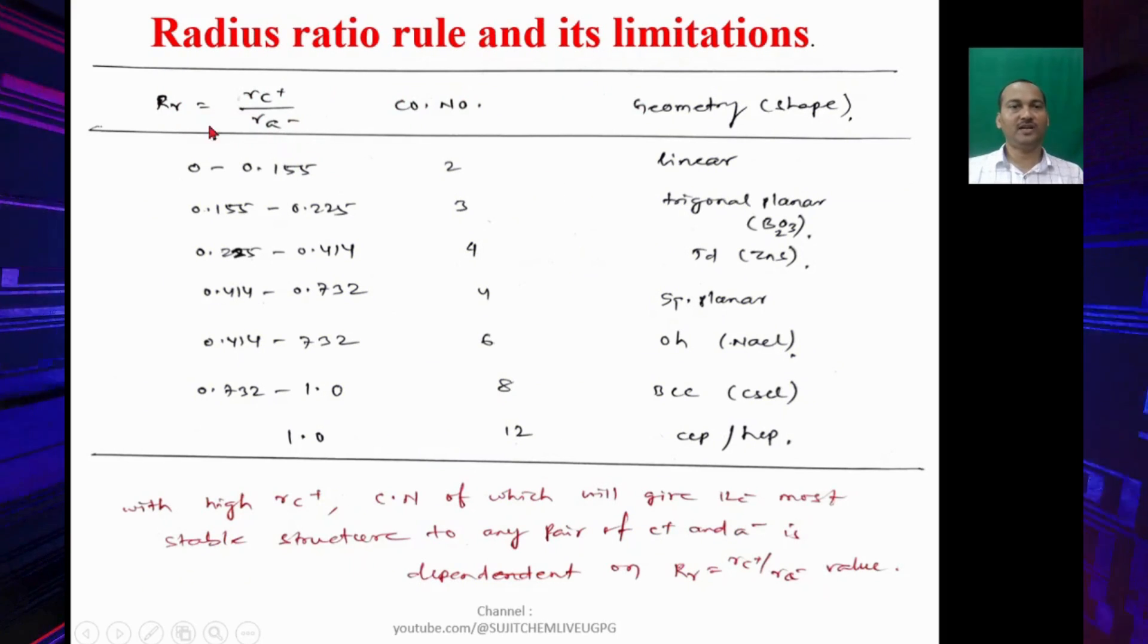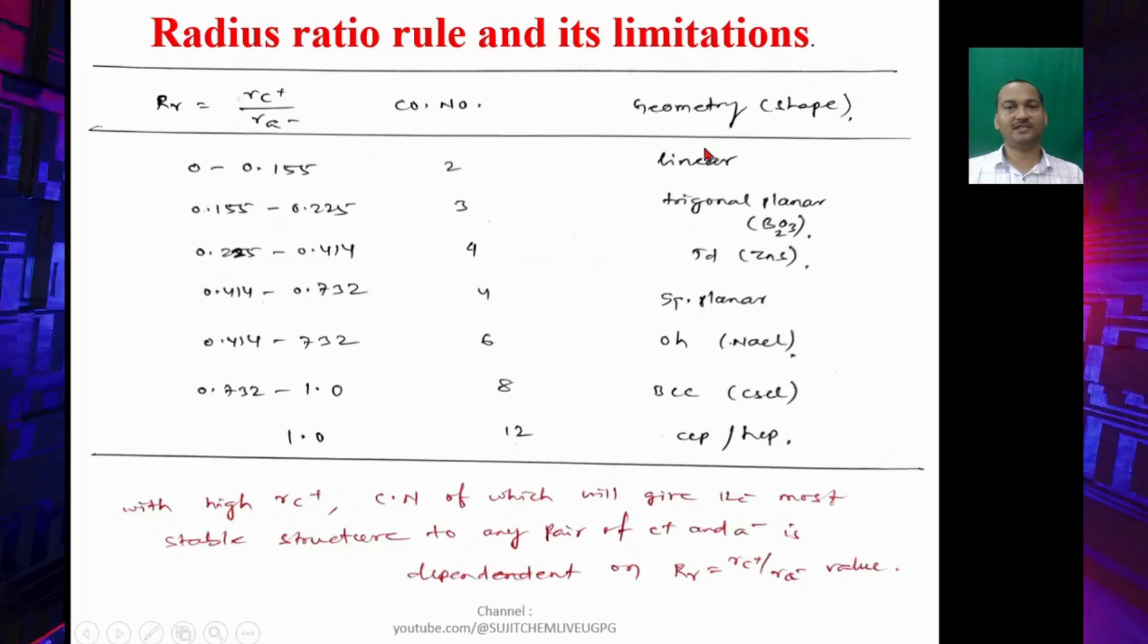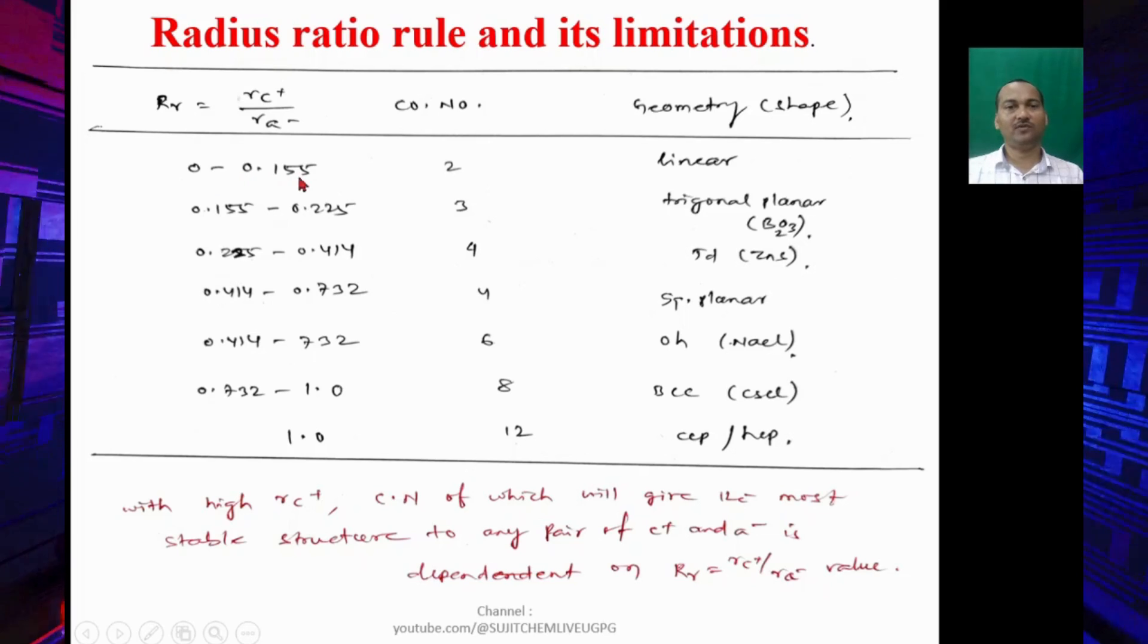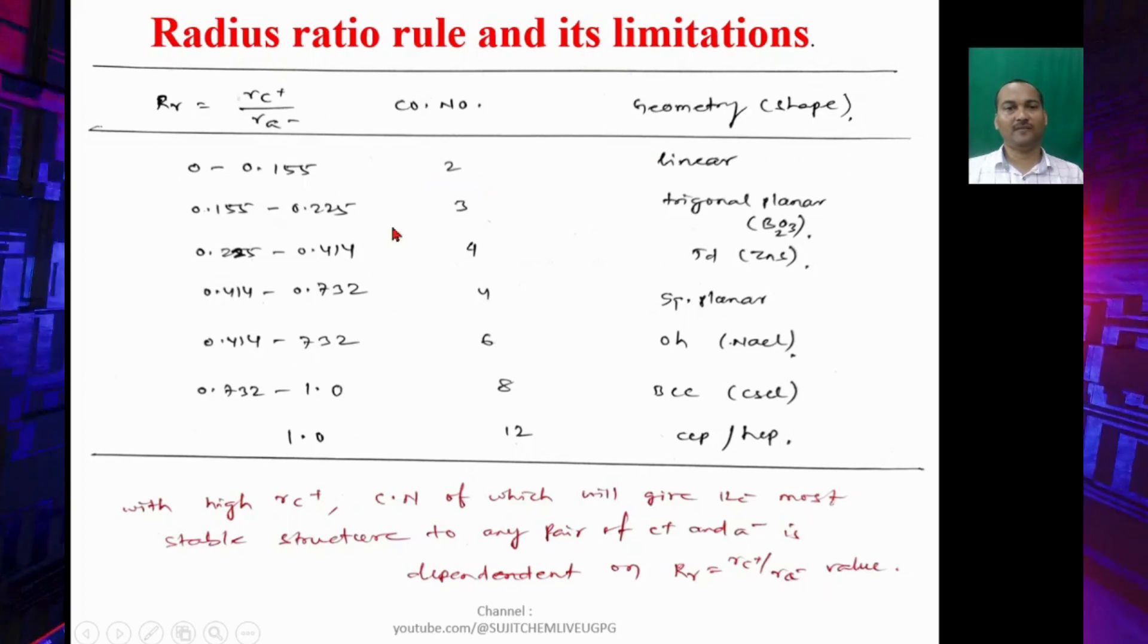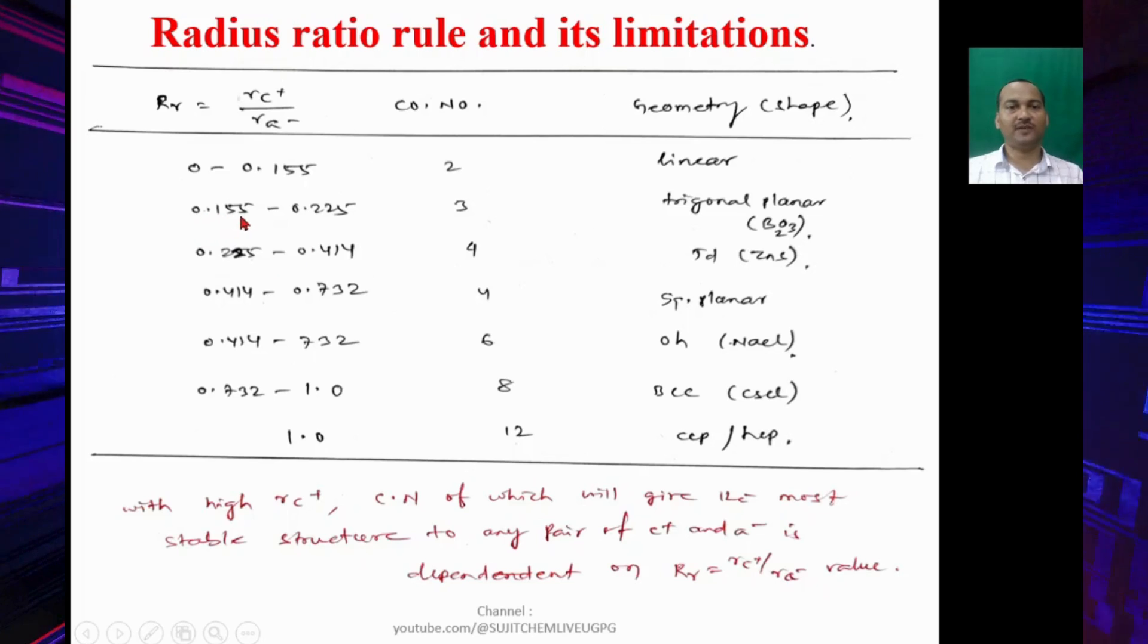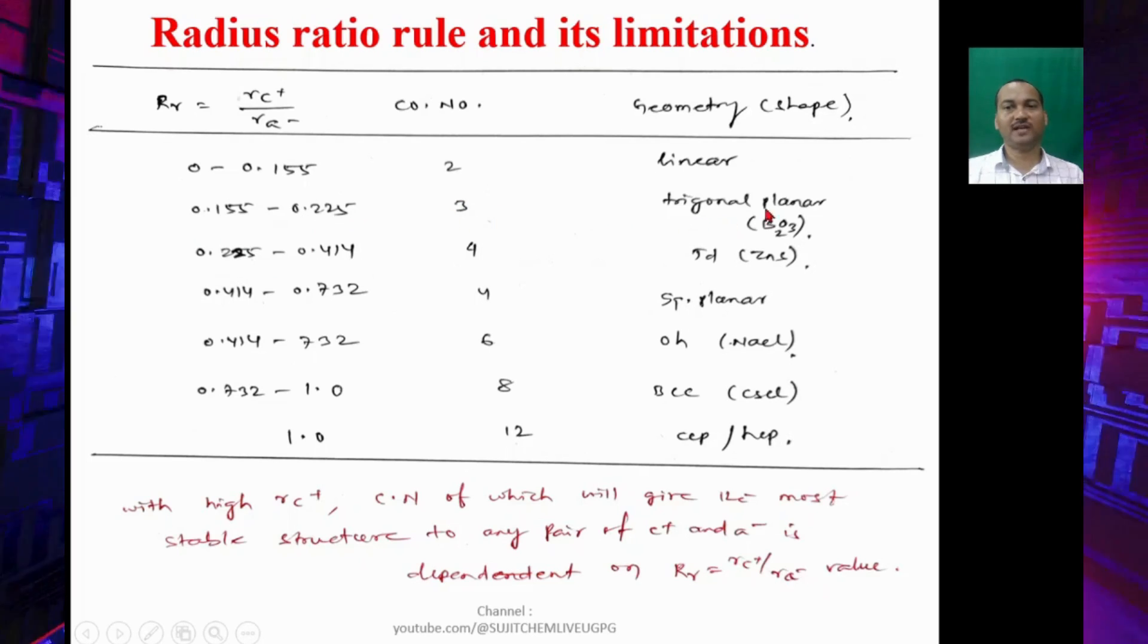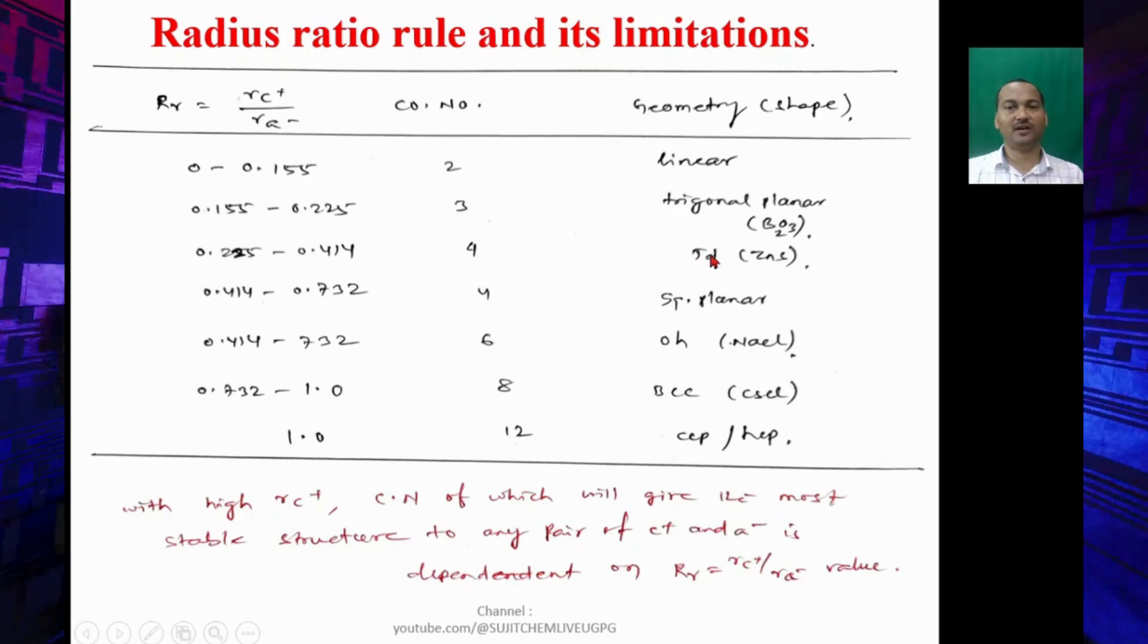Here is the table showing the relationship between radius ratio and coordination number and geometry of the crystal. Radius ratio value 0 to 0.155, coordination number is 2, geometry is linear. If the value is between 0.155-0.225, coordination number is 3, structure is trigonal planar. If the value is 0.225 to 0.414, coordination number is 4, geometry is tetrahedral.